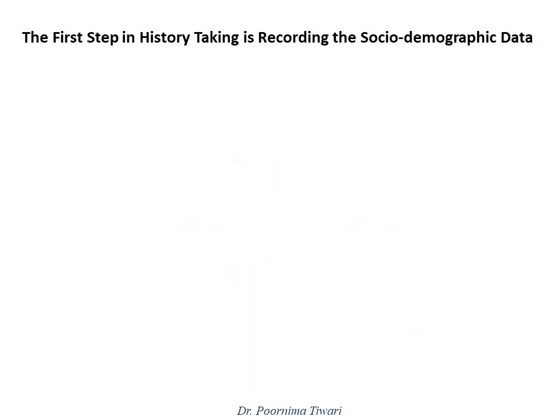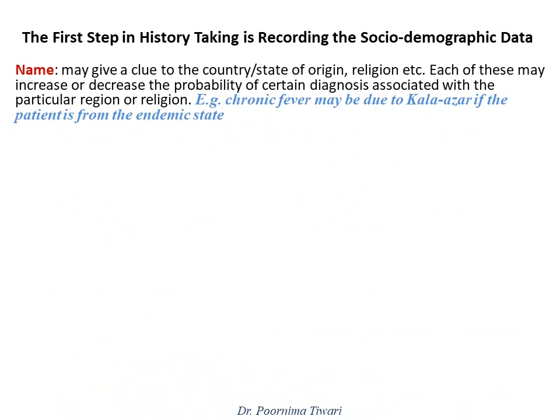The first step in clinical history taking is recording the socio-demographic data, each of which may give a crucial clue towards the diagnosis. The first is the name of the patient. The name itself may give a clue to the country or state of origin and the religion, and each of these may increase or decrease the probability of certain diagnoses. For example, if a person appears to be from a state that is endemic for kala-azar, a chronic fever is more likely due to kala-azar, whereas if the patient is from a malaria-endemic area, the fever may be explained by malaria.